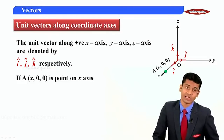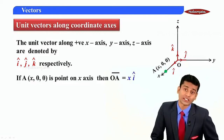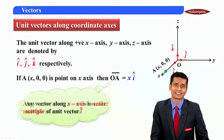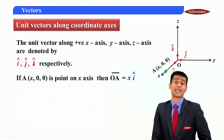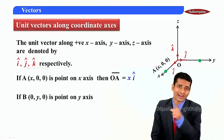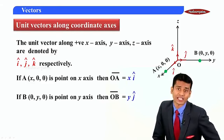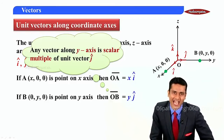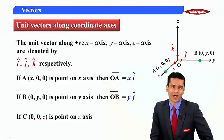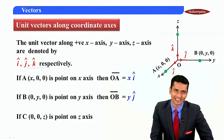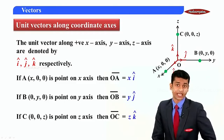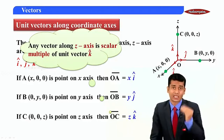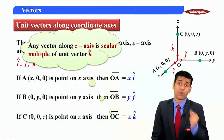Consider a point A(x, 0, 0) on the x-axis. Then the vector OA-bar equals x·i-cap, meaning any vector along the x-axis is a scalar multiple of i-cap. For point B(0, y, 0) on the y-axis, OB-bar equals y·j-cap, so any vector along the y-axis is a scalar multiple of j-cap. For point C(0, 0, z) on the z-axis, OC-bar equals z·k-cap, so any vector along the z-axis is a scalar multiple of k-cap.